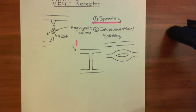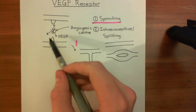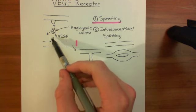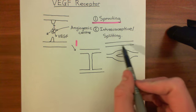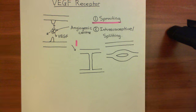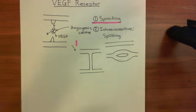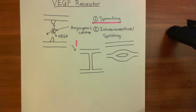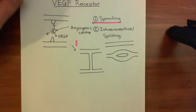VEGF triggers division changes, but also potentially huge changes in the phenotype of the cells. You don't just need division to get sprouting or splitting — you need migration and order. It's a very ordered event, far more complex than just having cells dividing. If you just had cells dividing and dividing, you'd end up with a mess — basically a tumour. This is very ordered, and it's achieved by changing gene expression within the cell.